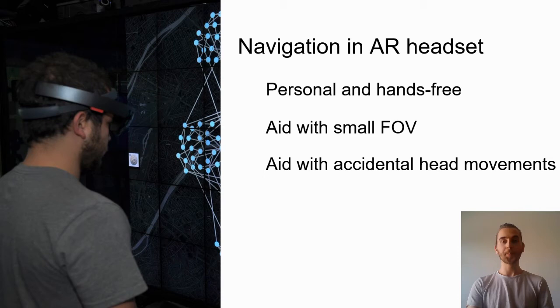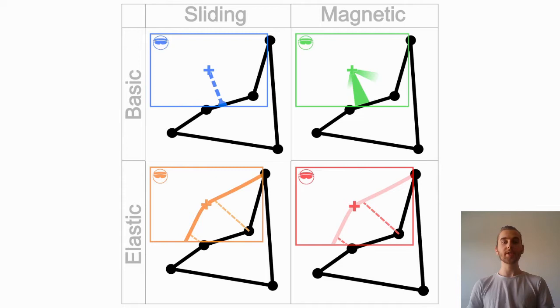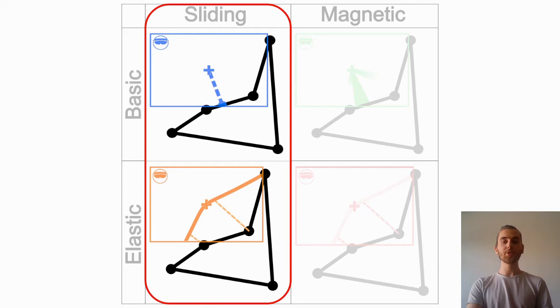We explored two types of AR-based cursors with two visual variations each. In each of these images, in black is the context network shown on the large display. In color is the AR cursor technique delimited by the box indicating the field of view of the AR headset. We worked on two metaphors inspired by the literature. First, the sliding metaphor, which focuses on an AR cursor tightly bound to the topology of the network on the large display. We call this persistent coupling.